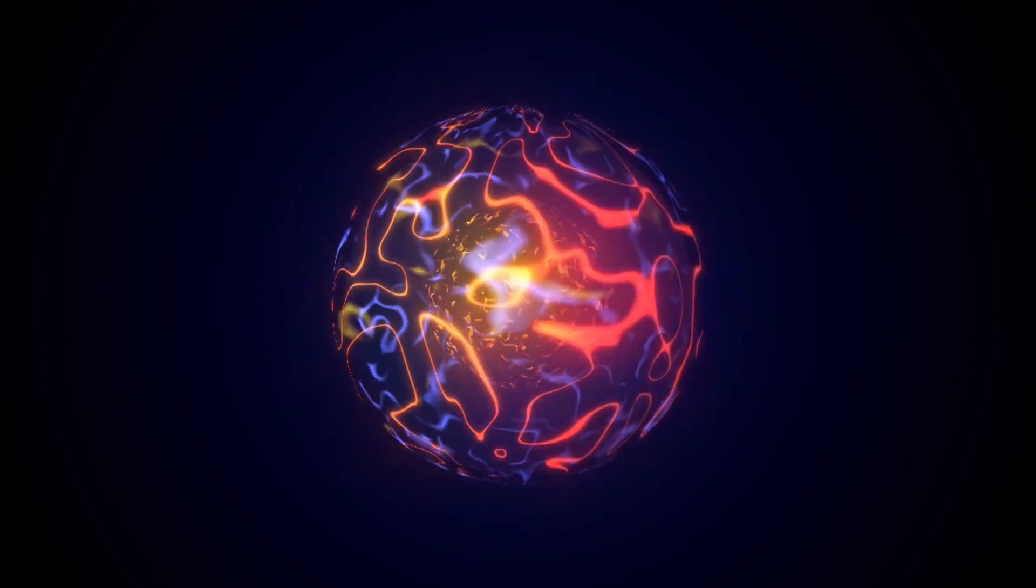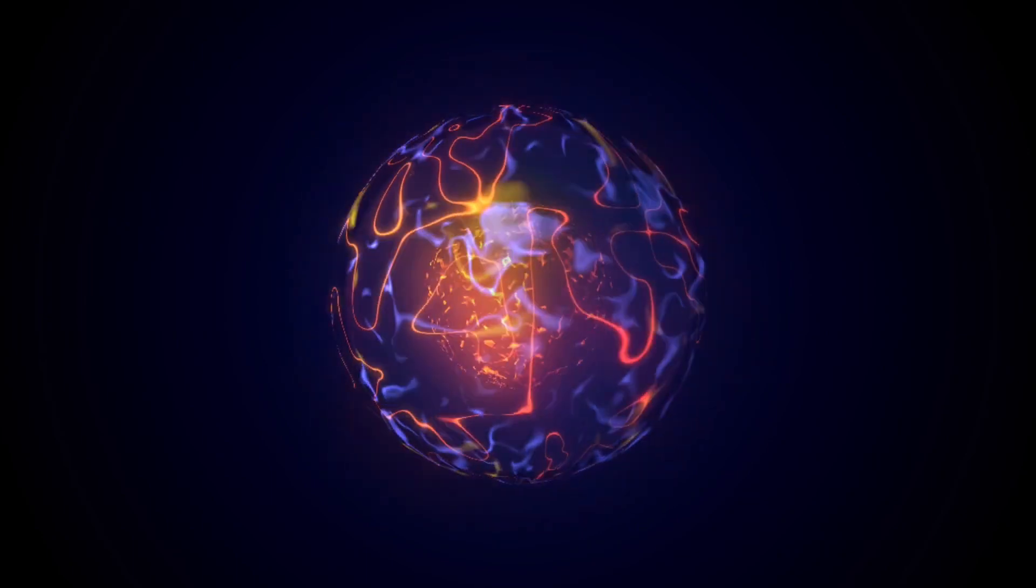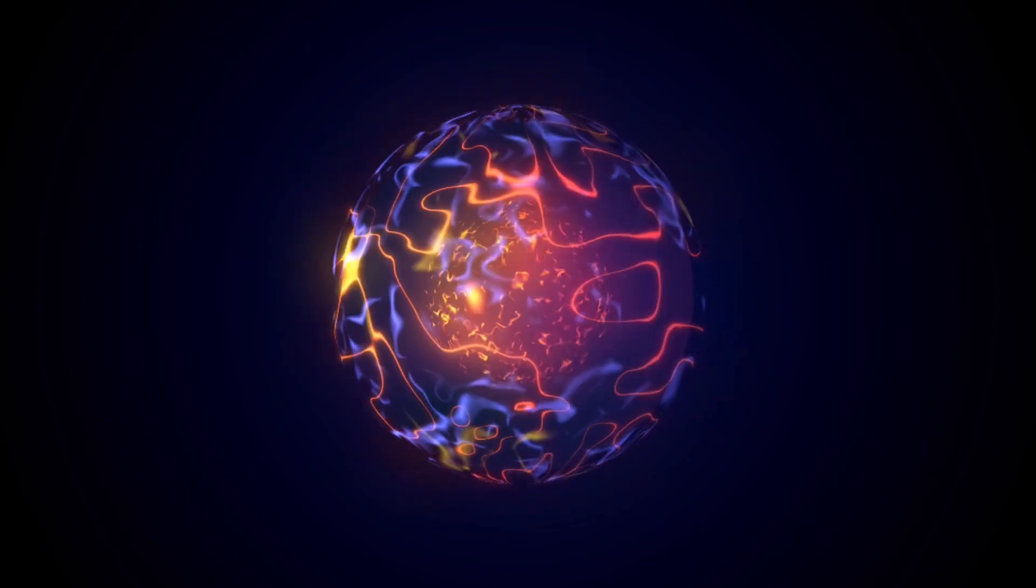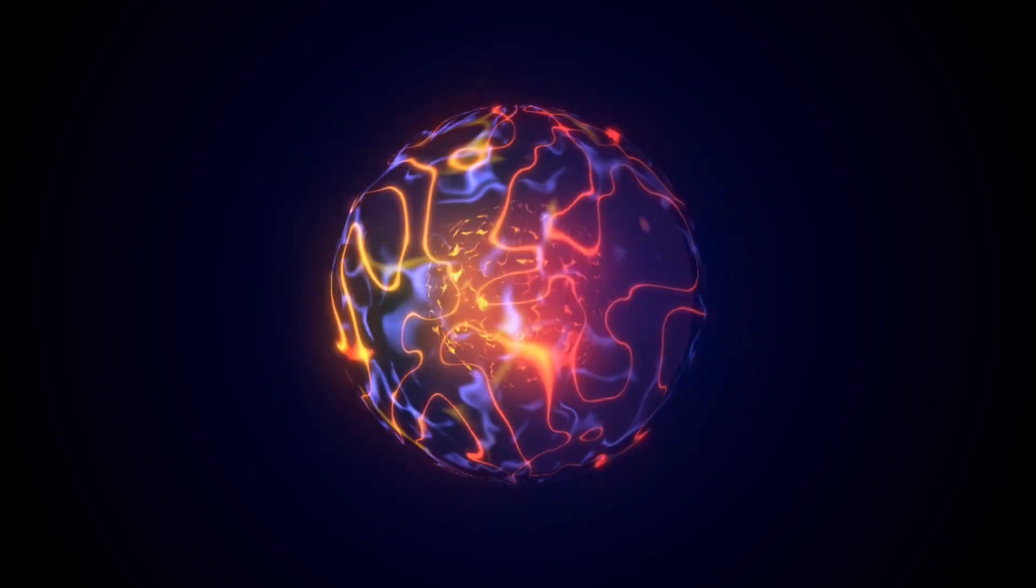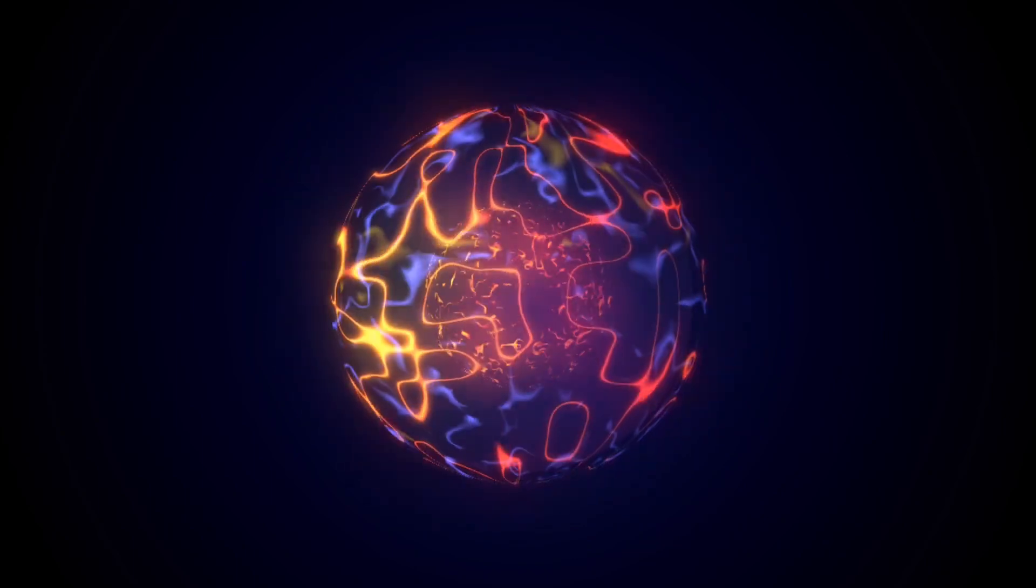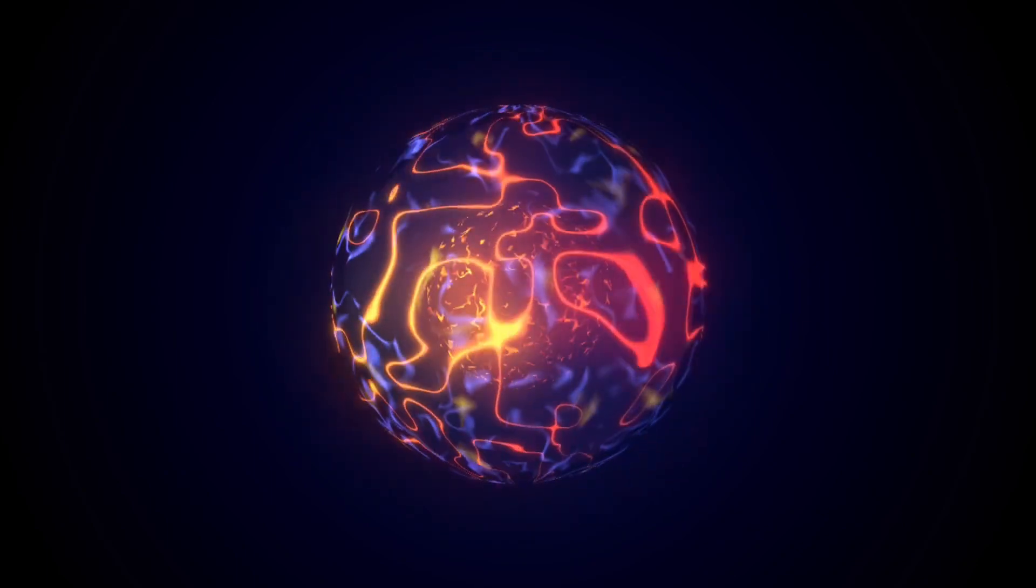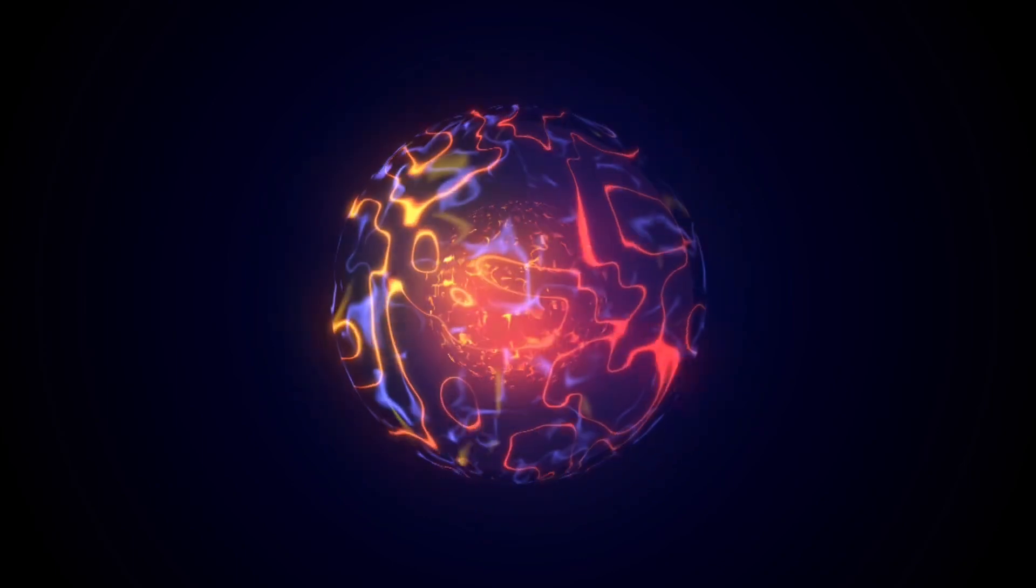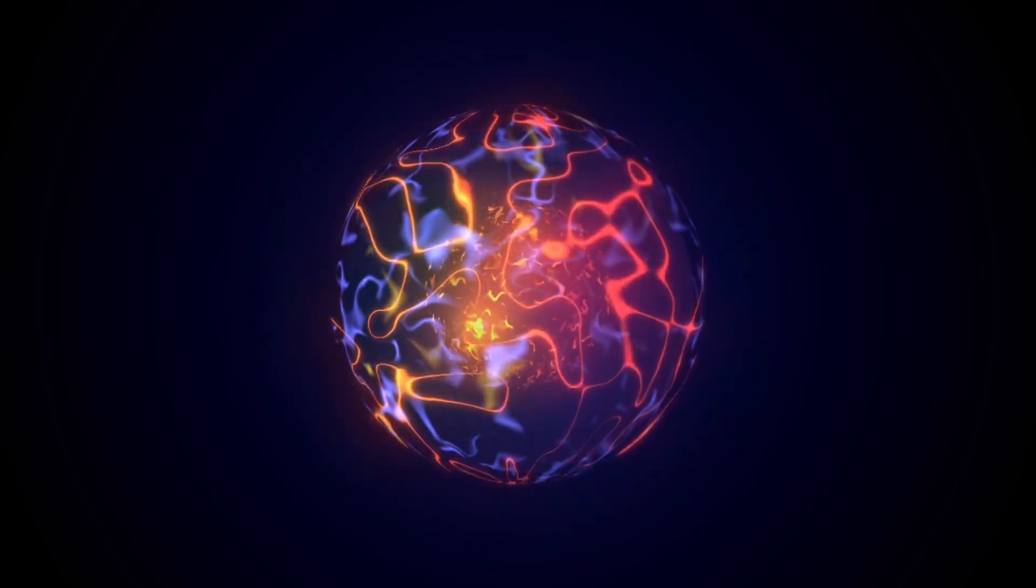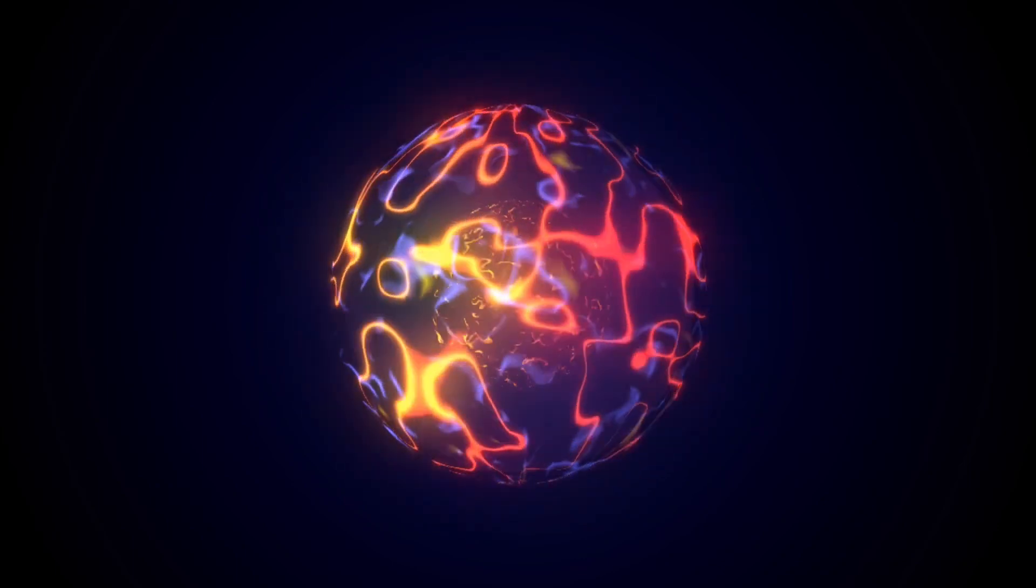Protostar formation. The dense core of the collapsing cloud is called a protostar. It continues to contract and heat up as more gas and dust fall into it. The gravitational energy released by the collapsing material is converted into heat energy, causing the temperature at the core to rise.